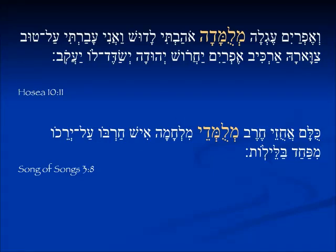In Song of Songs 3:8, talking about some warriors: 'kulam achuzei cherev, milum'dey milchama.' It is a bit more difficult to find examples of these forms, so we don't have a straight masculine singular. This is the masculine plural, but it appears in the smichut — the construct form. So: all of them, achuzei, they are holding a sword, milum'dey milchama — they are taught, they are being taught in the art of war.